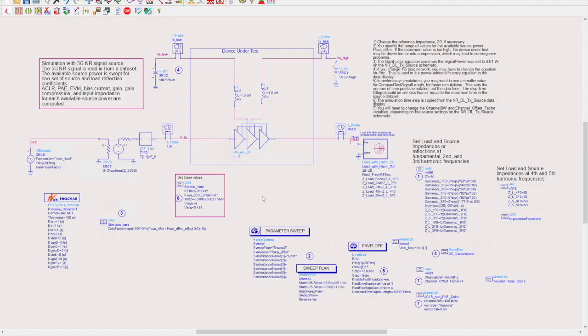Once we've generated the test signal that we want to use we can use it to test our DUT. This is an example test bench from Keysight. The voltage source takes the 5G signal that we just generated, amplifies it and passes it through our power amplifier.